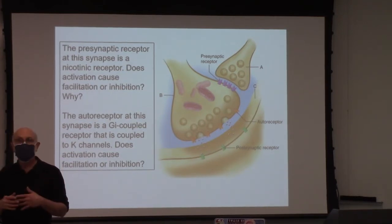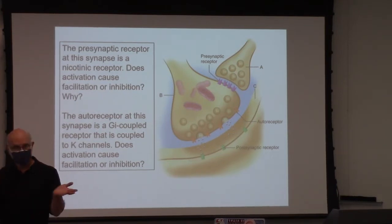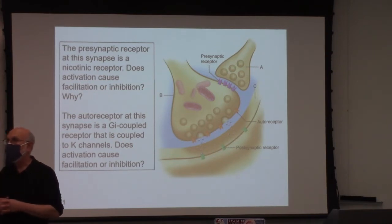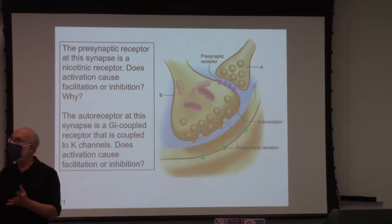The nicotinic receptor has permeability to both sodium and potassium, causing sodium influx, causing depolarization. And why does that facilitate neurotransmitter release?